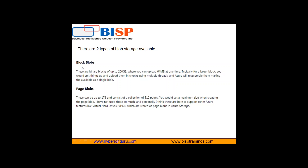There are two main types of blob storage: block blob and page blob. Block blobs are binary blobs with a capacity of up to 200 GB, where you can upload 64 MB at a time. If you want to store a file larger than 200 MB, you must divide it into chunks and upload using multiple sets; Azure will then reassemble them as a single blob. Page blobs can be up to one terabyte and consist of a collection of 512-byte pages. In today's video, we'll be creating a block blob.